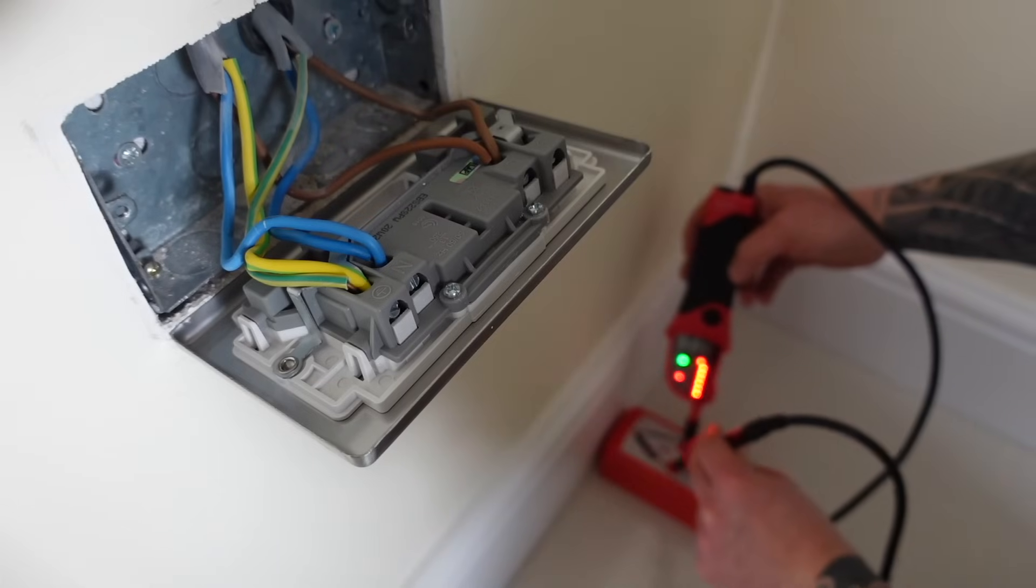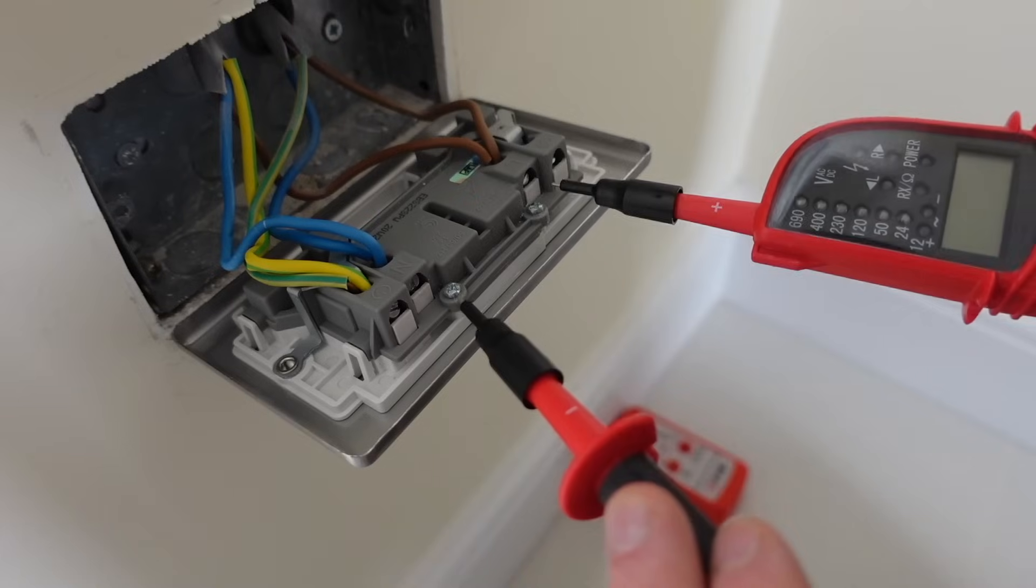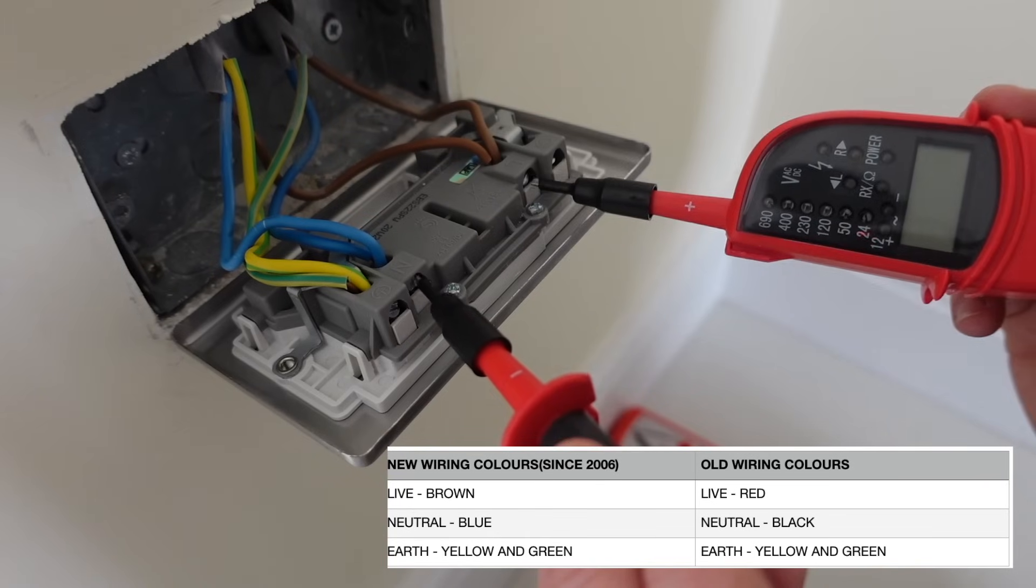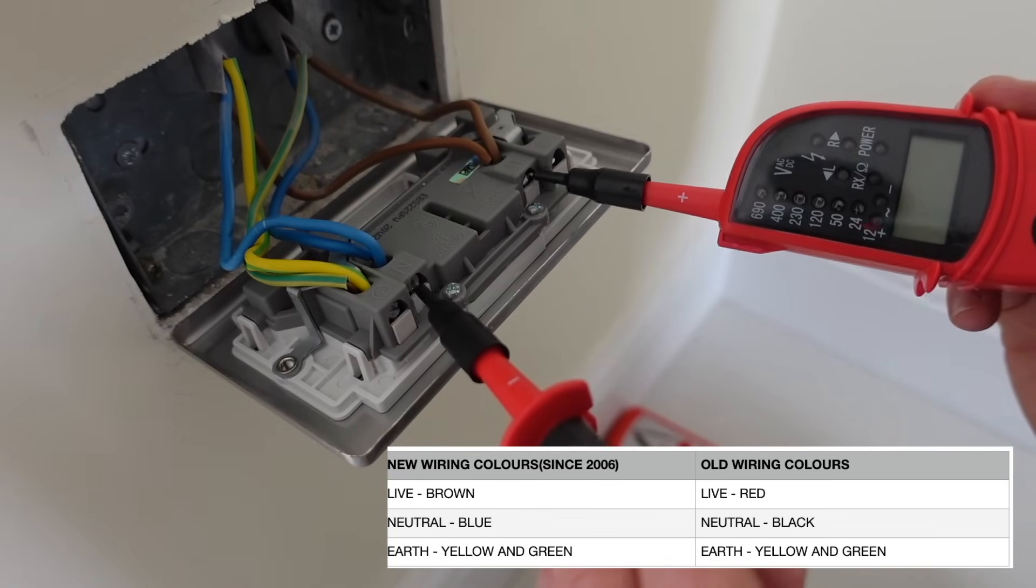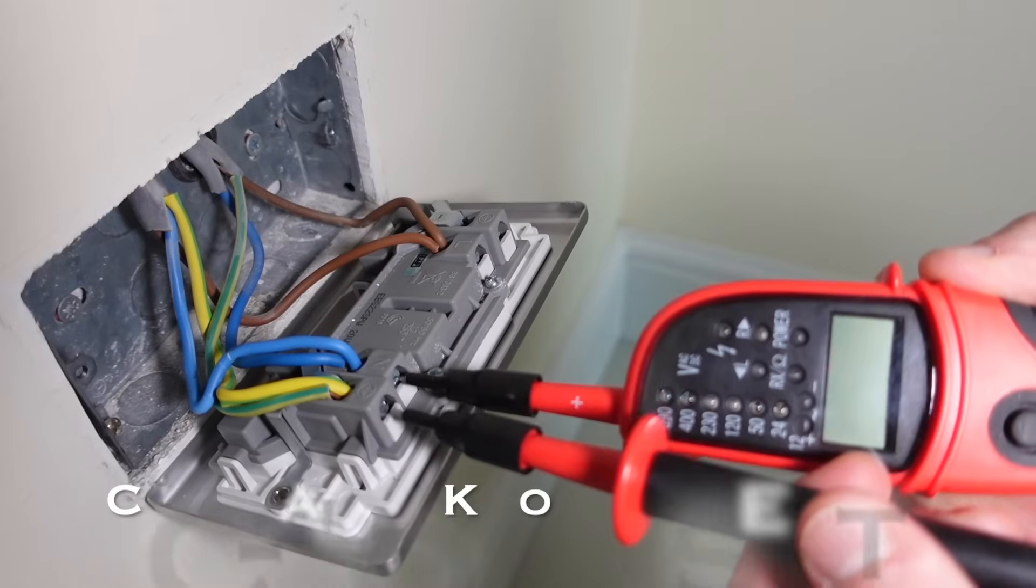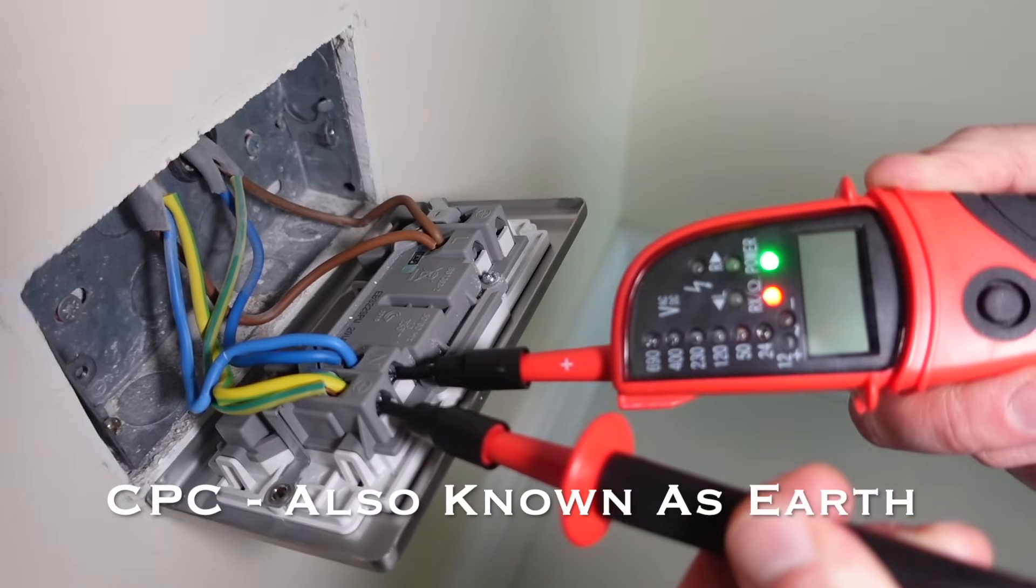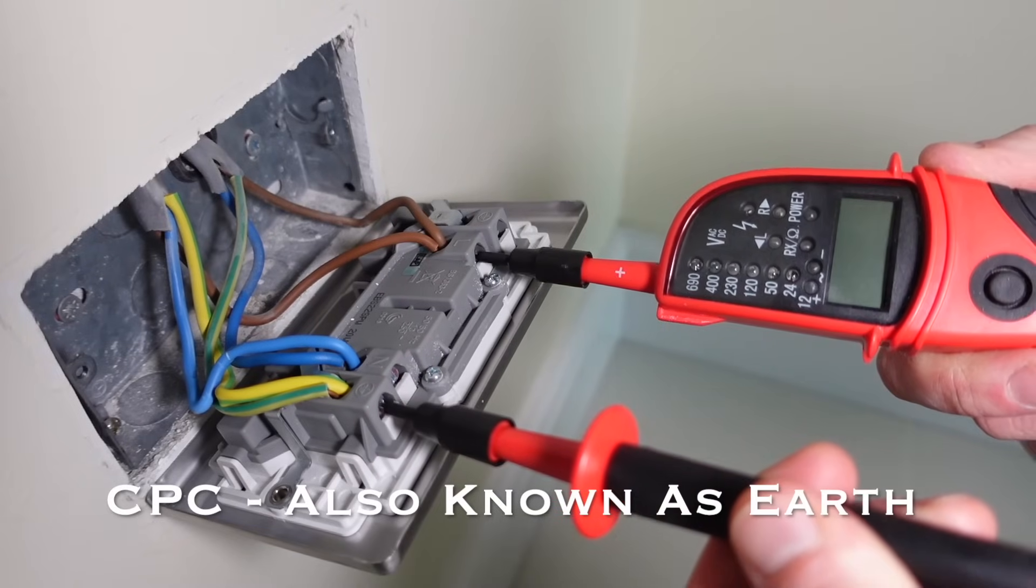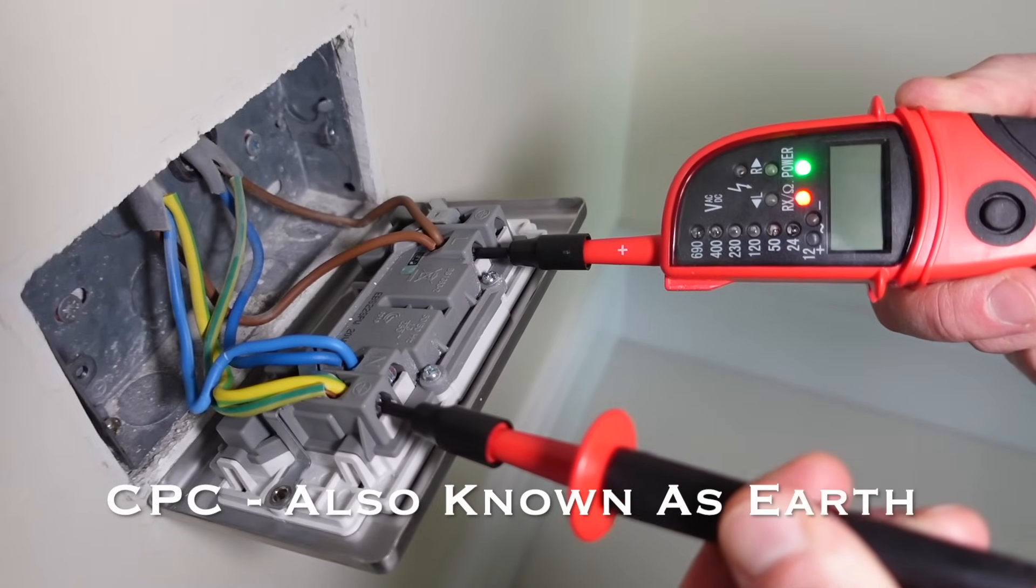First of all we check our voltage tester on the proving unit. We then check between the live or line, depends what you want to call it, and you'll see that all we'll have here is continuity. We have no voltage being displayed. CPC to neutral, that's dead. And we're going to test CPC to live and that's dead as well.